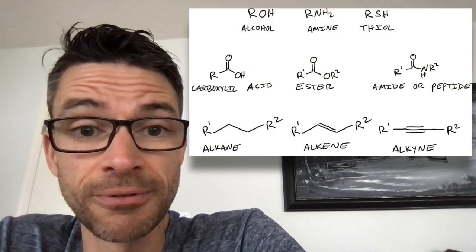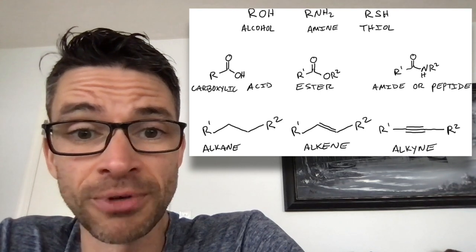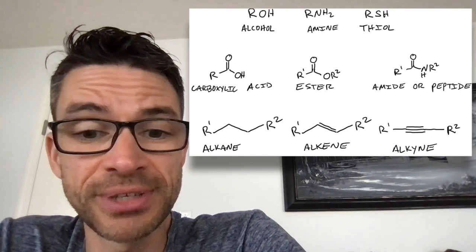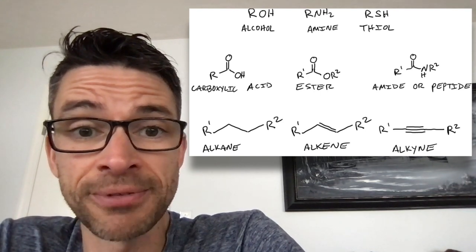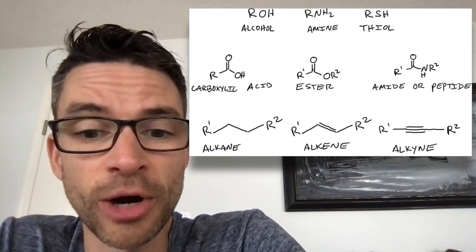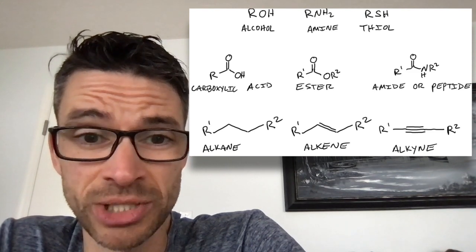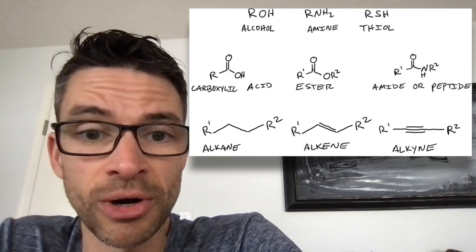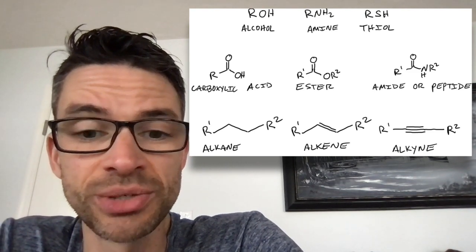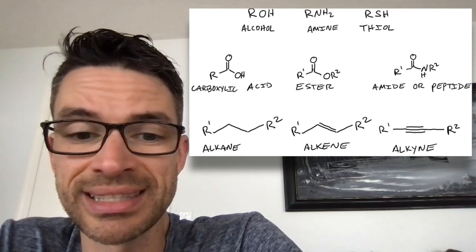Next thing we need to know is something about functional groups. So functional groups involve reactive structures that have atoms in them other than carbon or hydrogen. So ROH, where R is something that starts with carbon, but it could be anything. ROH is alcohol. RNH2 is amine. RSH is thiol.